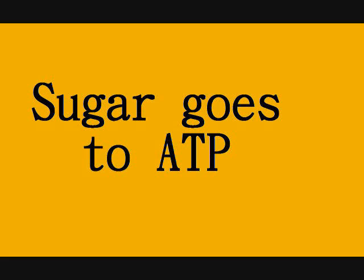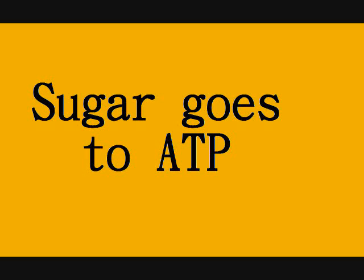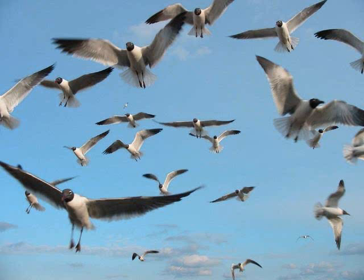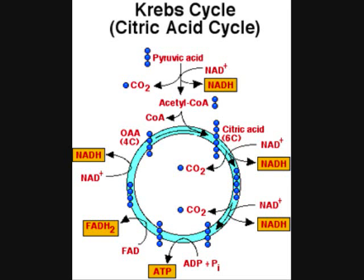Sugar goes to ATP — fuel for birds and you meet. Now this pyruvate moves down through the double membrane. The mitochondrial matrix chain is broken even further, giving electrons to NAD and FAD.